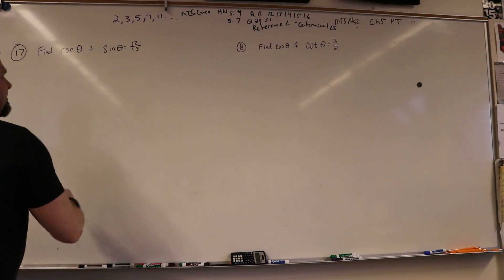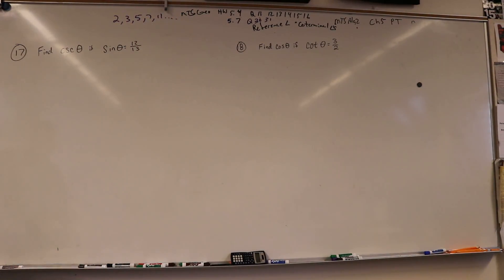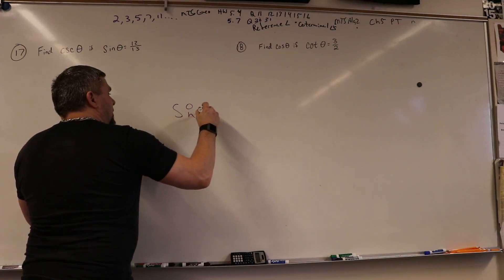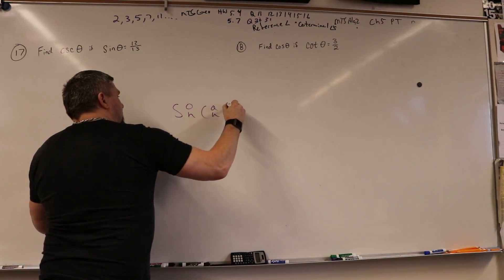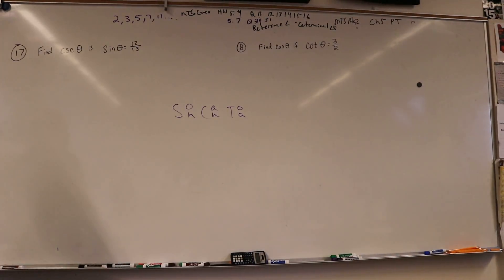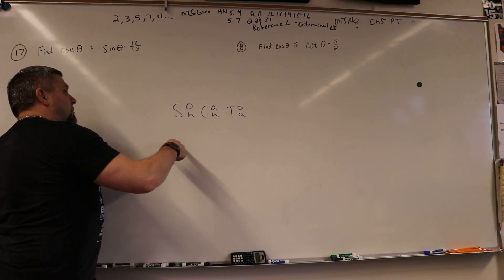Okay, so we got 17 and 18. Find the cosecant, find the sine. So we kind of need to know SOH CAH TOA, but more than SOH CAH TOA, we need to know Pythagorean triples.